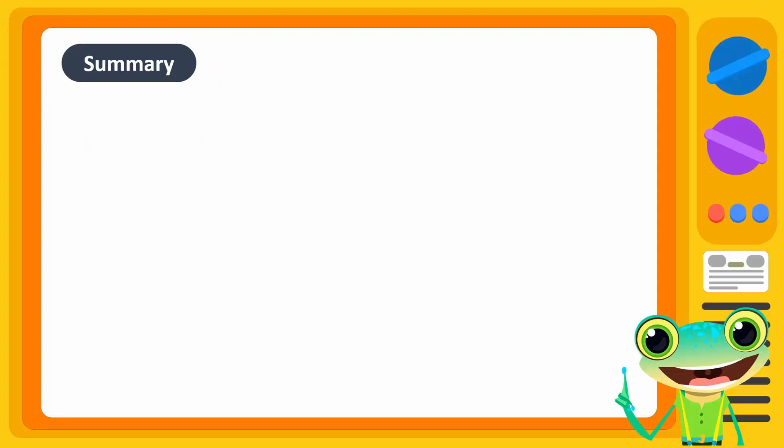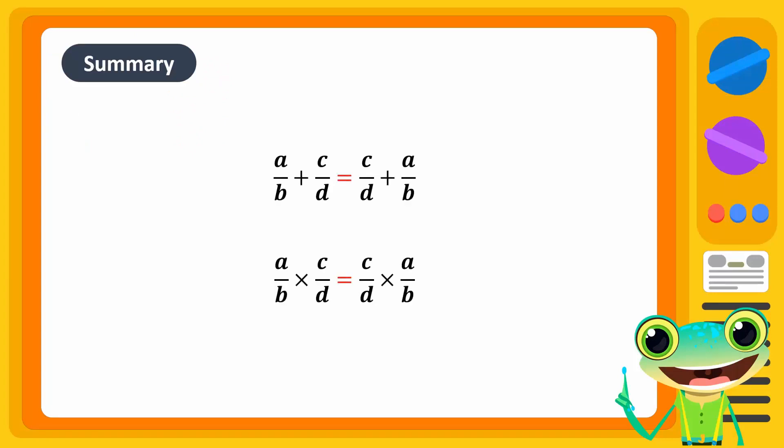To summarize, the addition and multiplication of two rational numbers is commutative.